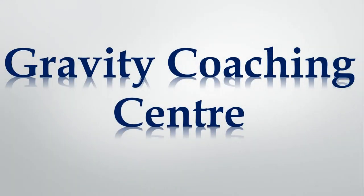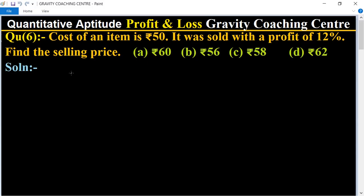Welcome to our channel Gravity Coaching Center, Quantitative Aptitude chapter Profit and Loss. Question number six: Cost of an item is rupees 50 and it was sold with a profit of 12%. So find the selling price.